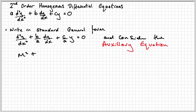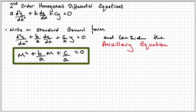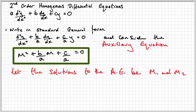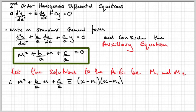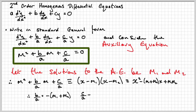What we now need to do is consider what is known as the auxiliary equation, and that is simply a quadratic that has the same coefficients in the way that you see inside this green box. We're going to let the solutions to the auxiliary equation be m1 and m2. Expanding that out and comparing coefficients, we can claim that b/a equals minus (m1 + m2) and c/a equals m1·m2.